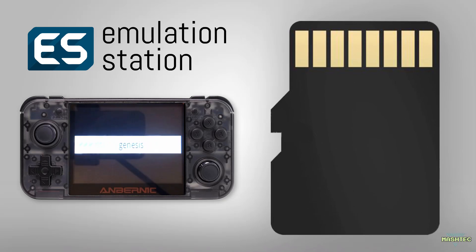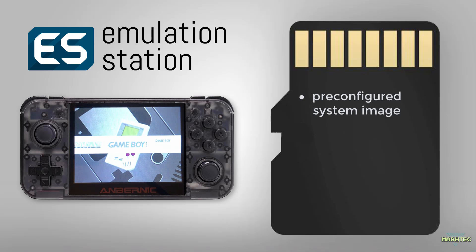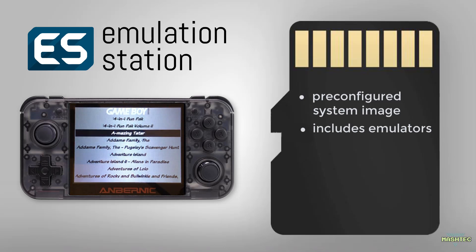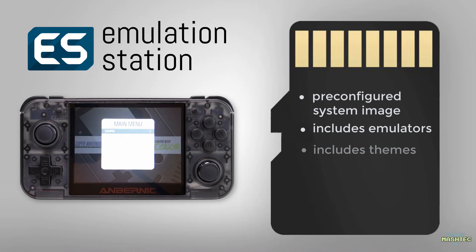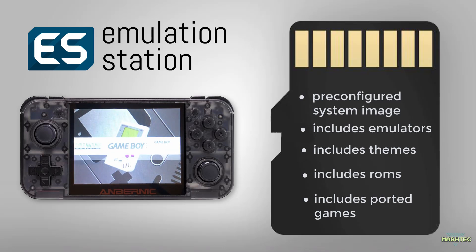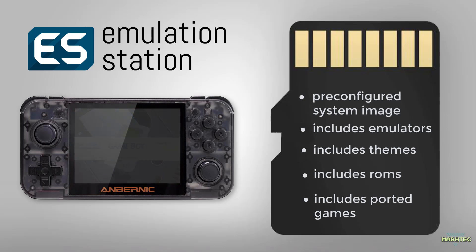The entire configuration is already done for you. Beside Emulation Station, the image comes with all emulator systems pre-installed, pre-installed themes, and the best — it also includes a big set of ROMs and a bunch of ported games like Jazz Jackrabbit, Open Tyrion, Free Doom, or Streets of Rage Remake. I want to say big thanks to Matthew Mackin for providing this image to the RG350 community and all the work he put into it.